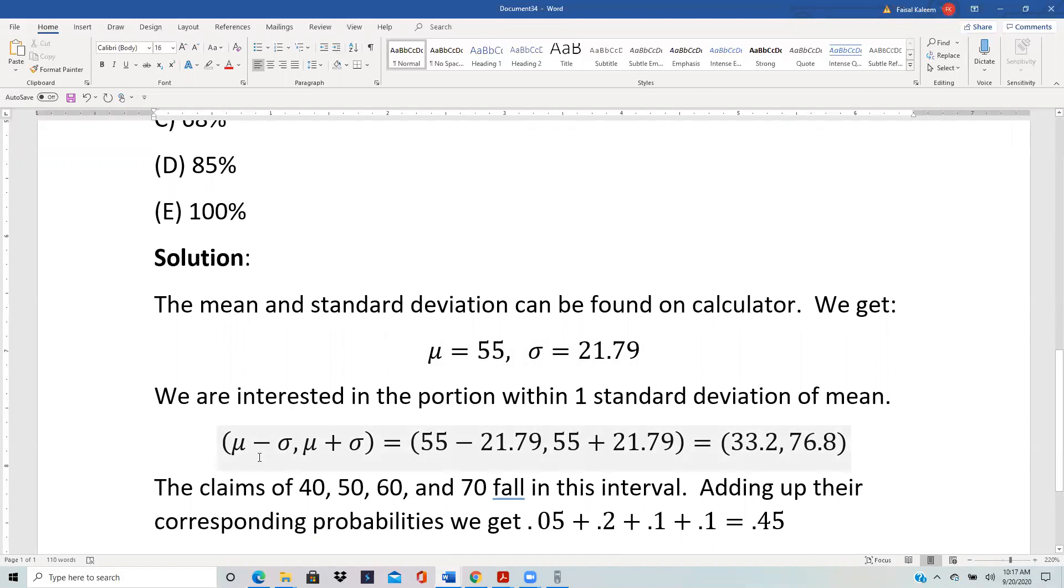So here we just do mu minus sigma, mu plus sigma and we get this interval 33.2 to 76.8. So we are being asked what proportion of claims lie in this interval.